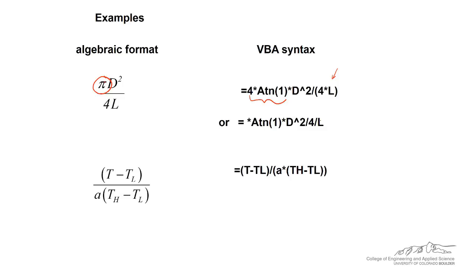This one we would have T minus TL divided by quantity A times quantity TH minus TL. So you can force the order of operations using parentheses. If we didn't want to use these outer parentheses here, you can always do the same thing like we did above, where you divide by A and then take that result and divide by TH minus TL in parentheses. So that's it for basic expressions in VBA. Thanks for watching.